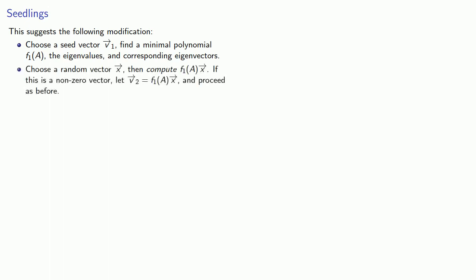And so this suggests the following modification to our procedure. First we'll choose a seed vector v1, find a minimal polynomial f1 of A, the eigenvalues and the corresponding eigenvectors. Now if we don't find all of the eigenvalues and eigenvectors, we'll choose a random vector x and then compute f1(A) applied to x. If this is a non-zero vector, we'll let v2 be f1(A) applied to x and proceed as before. And we'll extend our botanical analogy and call this vector v2 a seedling vector. In effect, we've grown our vector x into a better vector for finding the remaining eigenvalues.